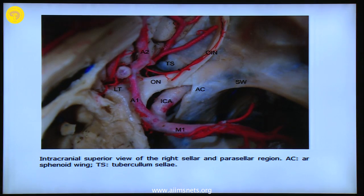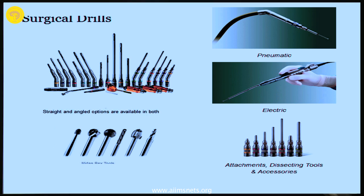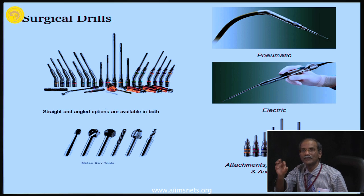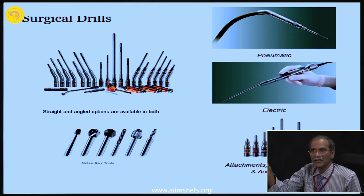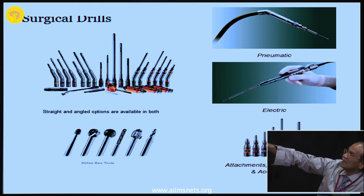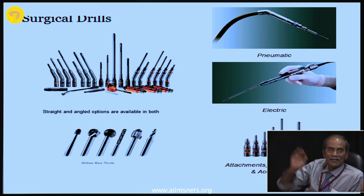There are two drill control types: hand control and foot control. Foot control drill is very commonly used, offering very high speed — around 70,000 RPM. There are different types of drill bits available, and studies have examined heat generation from each type. Diamond drill bits versus cutting drill bits have been studied — diamond drills and cutting drills both release temperatures around 45 degrees, which is within a safer range near soft tissue.